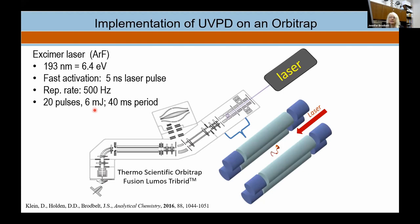Our favorite laser is an excimer laser filled with argon fluoride gas, producing photons at 193 nm — that corresponds to almost 6.5 electron volts per photon, a lot of energy per photon. We can use multiple photons with higher power or multiple pulses. Each pulse is only 5 nanoseconds, and for lipids we typically use multiple pulses — around 3 to 5 millijoules — occurring in about a 40 millisecond period. Thermo has also launched a UVPD product using a 213 nm solid-state laser that fits right in the back of the instrument cabinetry, which we have also used for lipid studies.